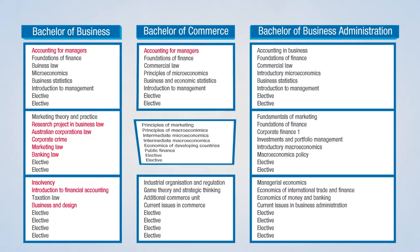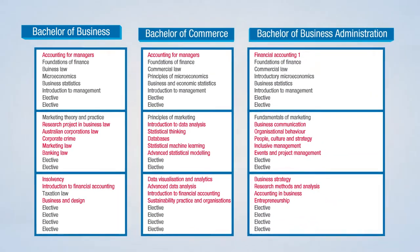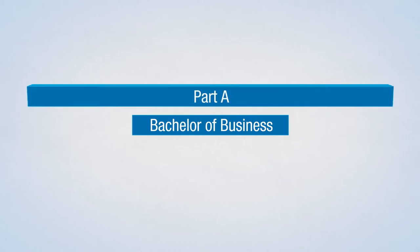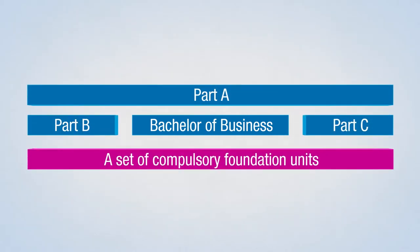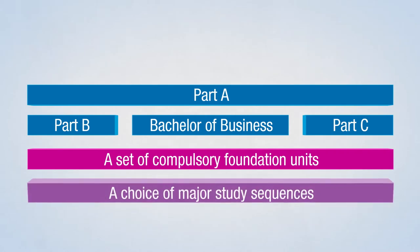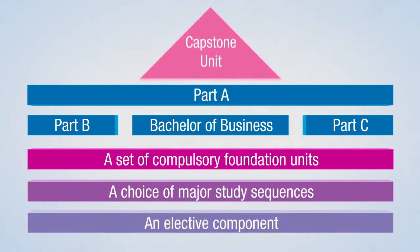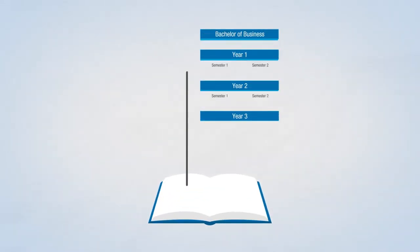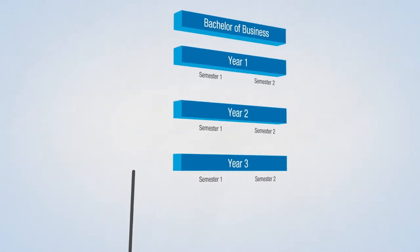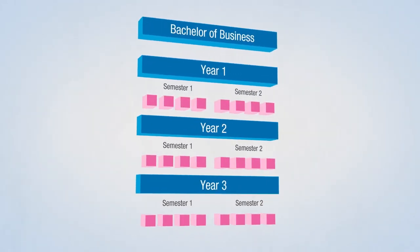Comprehensive means that you have the flexibility to choose your specialist area and most of your subjects. All courses include Part A, Part B and Part C: a set of compulsory foundation units, a choice of major study sequences, an elective component and a capstone unit. Check the University Handbook to find out your course rules, including compulsory requirements such as how many units you can take at particular year levels.